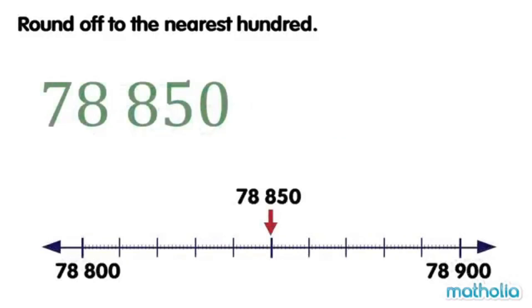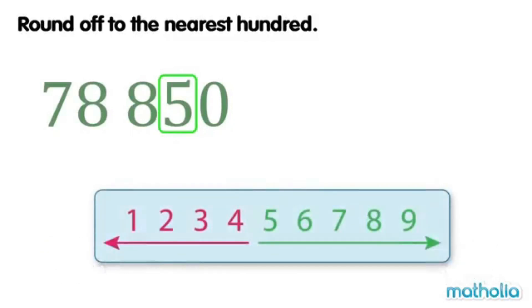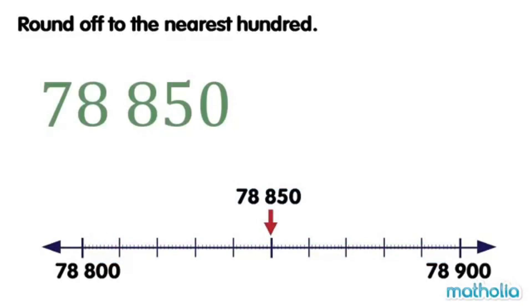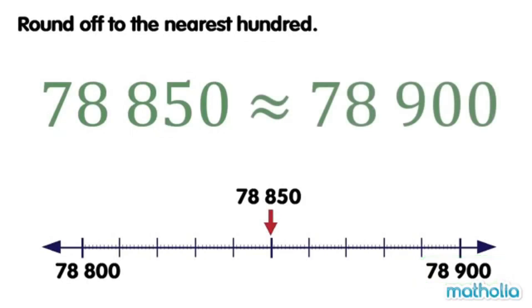Let's round off 78,850 to the nearest 100. The digit in the tens place is 5. Digits that are 5 or more are rounded up. So, 78,850 is rounded up to 78,900. To the nearest 100, 78,850 is approximately equal to 78,900.